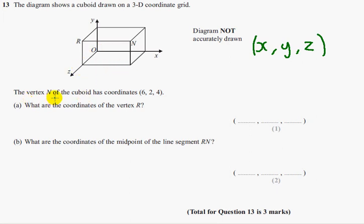So the vertex N has the coordinates 6 across, 2 up and 4 towards you.